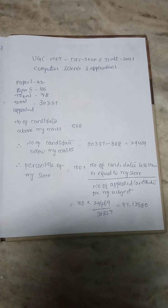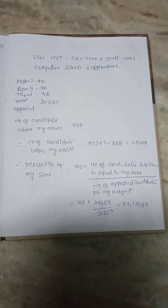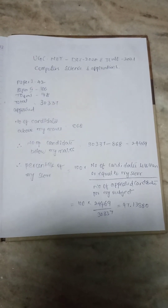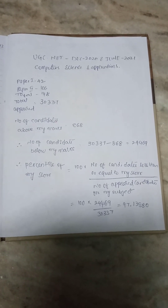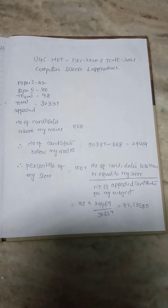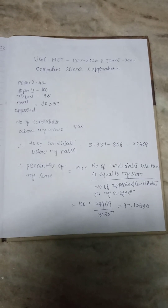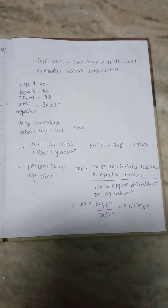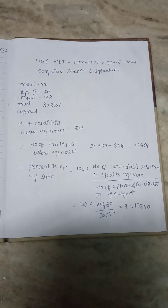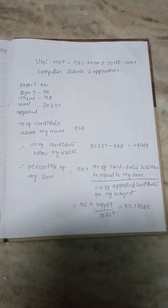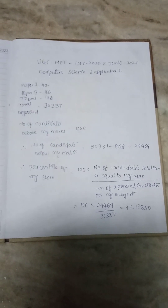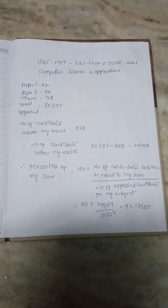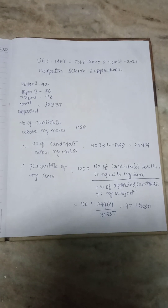If you do this calculation, you get 97.138. So I got 97.138 percentile in the UGC NET computer science and application subject. If you like this video, please share and subscribe to my channel. Thank you for watching.